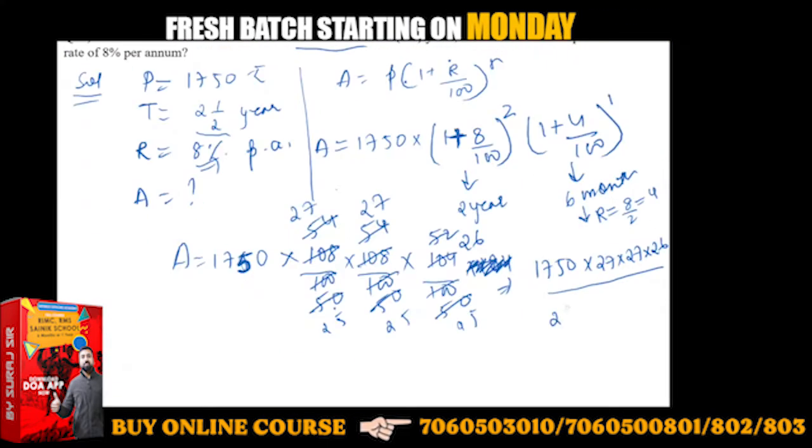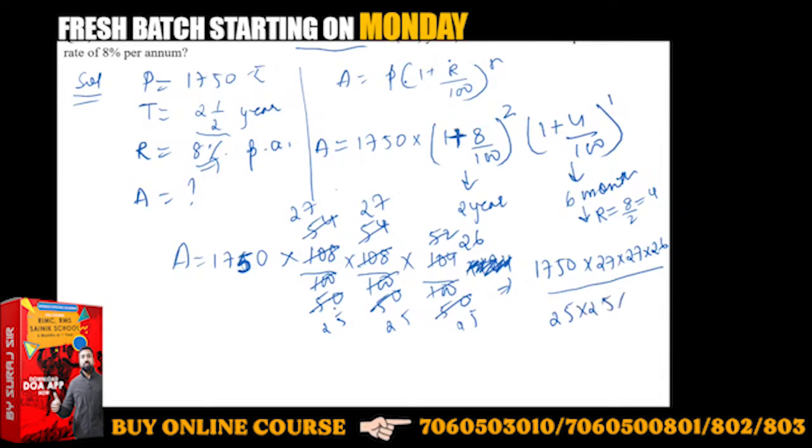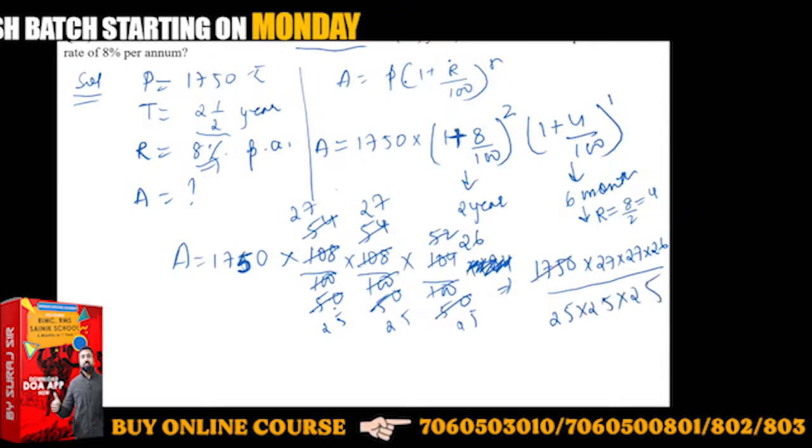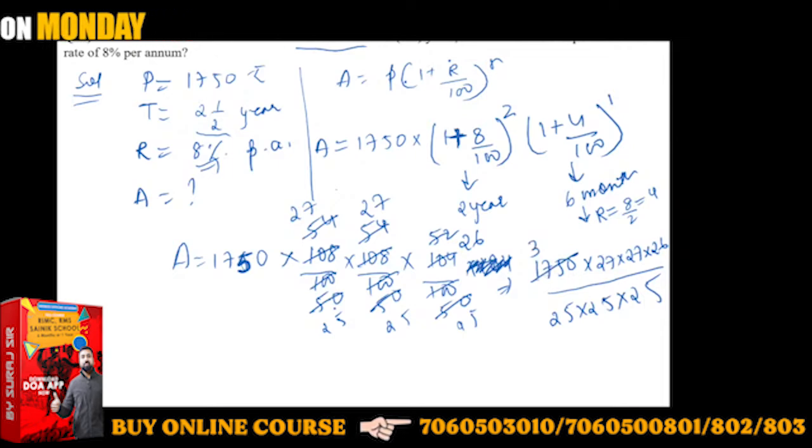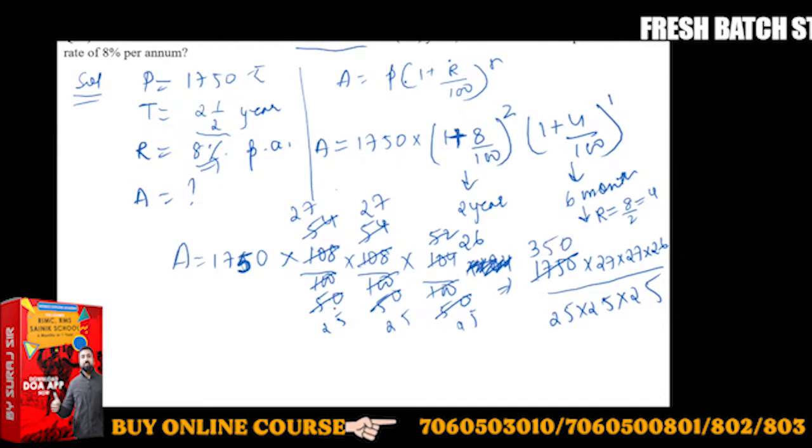Solve this to get the answer. This will be 5 times 3 is 15, 5 times 5 becomes 50. This simplifies further.